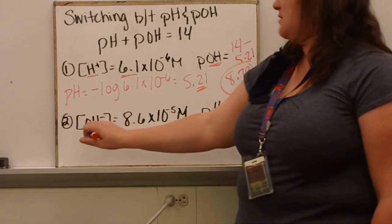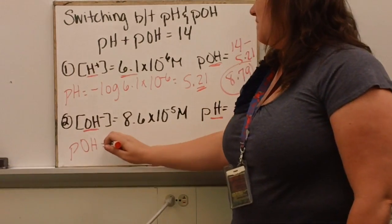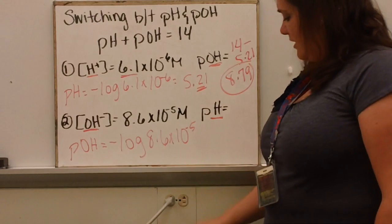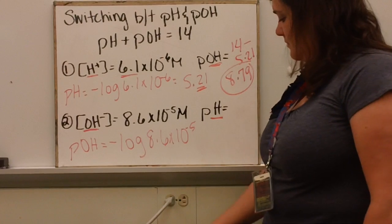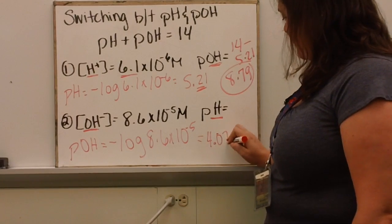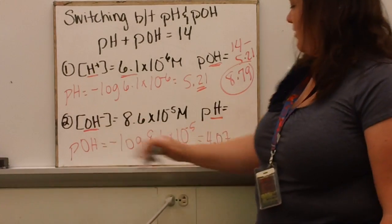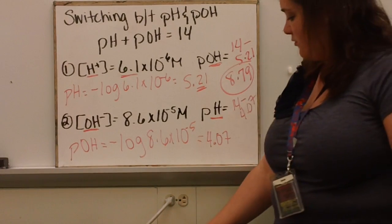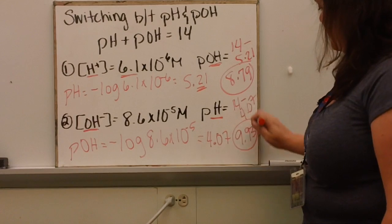Likewise, if you have a hydroxide concentration and want the pH, first find the pOH by taking the negative log of the hydroxide concentration, which gives 4.07 (two decimal places for two sig figs). Then pH = 14 − 4.07 = 9.93.